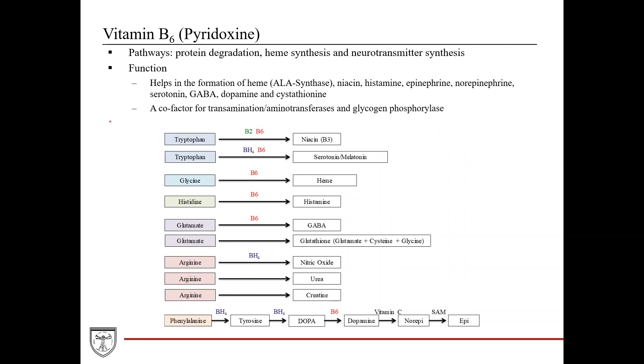Vitamin B6, also known as pyridoxine, is used in protein degradation, heme synthesis, and neurotransmitter synthesis. It helps in the formation of heme as a cofactor for ALA synthase, formation of niacin, histamine, epinephrine, norepinephrine, serotonin, GABA, dopamine, and cystathionine. You can see B6 used for all of these different molecules, and even for dopamine from DOPA. It's a cofactor for transamination and aminotransferase reactions, which are critical for amino acid metabolism. It's also a cofactor for glycogen phosphorylase, which is critical for glycogen metabolism.